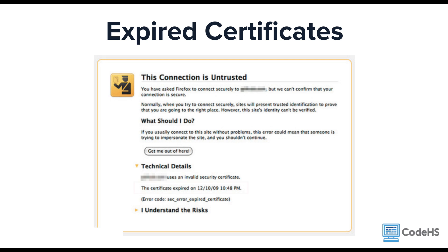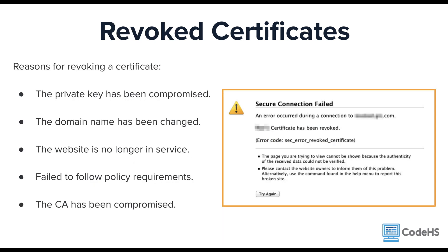After a certificate expires, it needs to be renewed. This is similar to how your driver's license or passport needs to be renewed periodically. Renewing ensures that the certificate is up to date and that the identity and legitimacy is rechecked every so often. If you see a notification like this, don't visit the site — cybercriminals can take advantage of expired certificates and gain information from the site's users. A revoked certificate should raise an even bigger red flag. Revoking a certificate is when a previously signed certificate is invalidated and can no longer be used for authentication purposes. This might happen because the private key has been lost, stolen, or compromised, the domain name has been changed, or the website is no longer in service. Also, if the site fails to follow policy or the certificate authority has been compromised, then the certificate could be revoked.